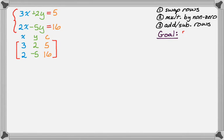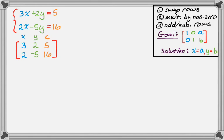My goal is to end up with a matrix that looks like this: 1, 0, A, and then 0, 1, B. And then having done that, I'll know the solution to the equation. So the solution to the equation will be x equals A, y equals B. So let's see if we can do this.